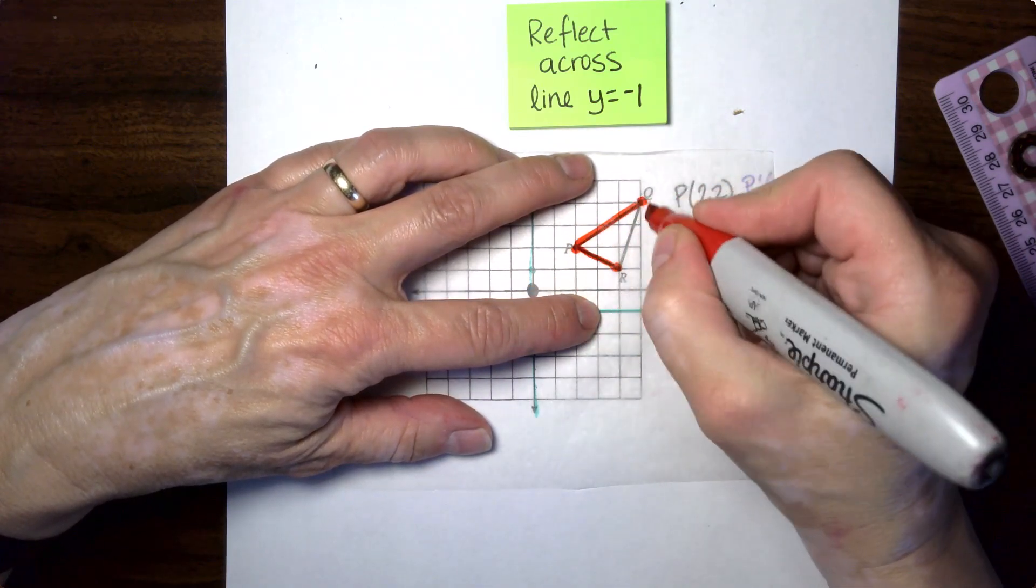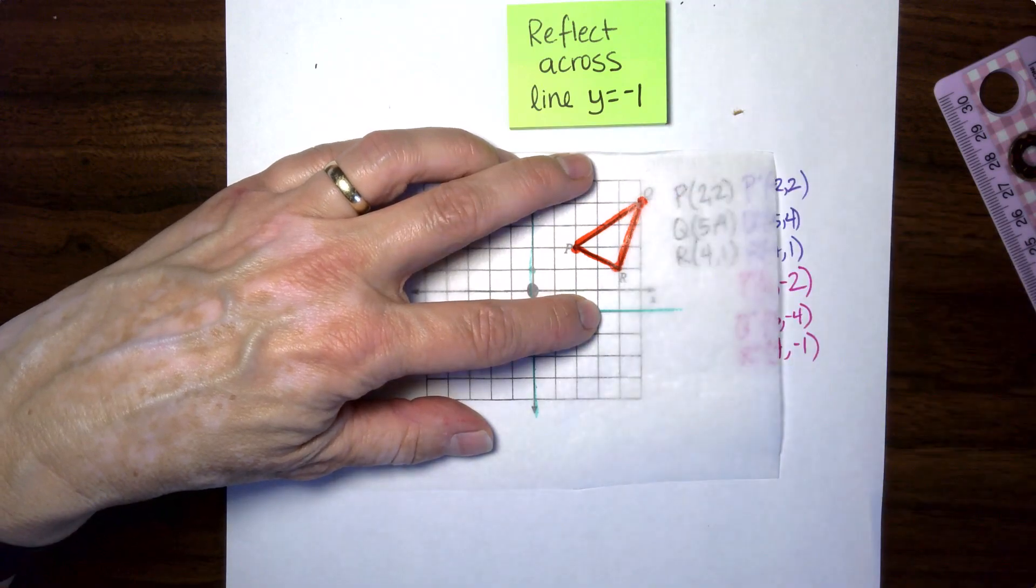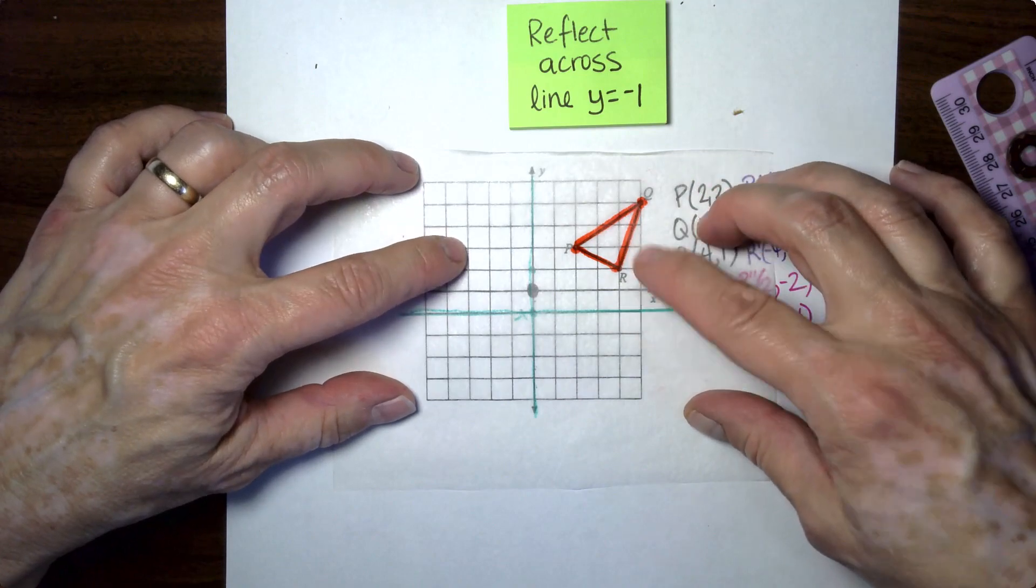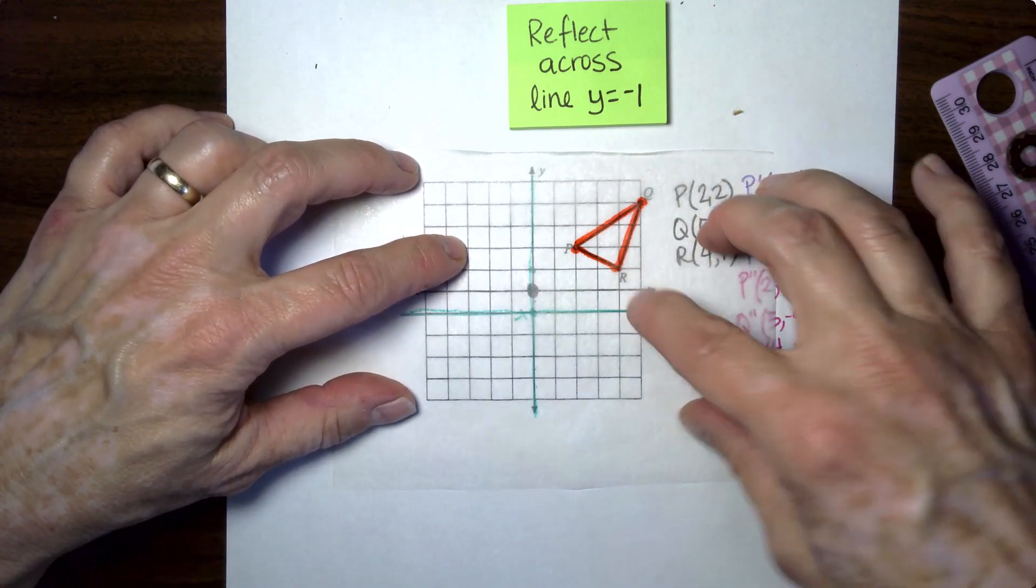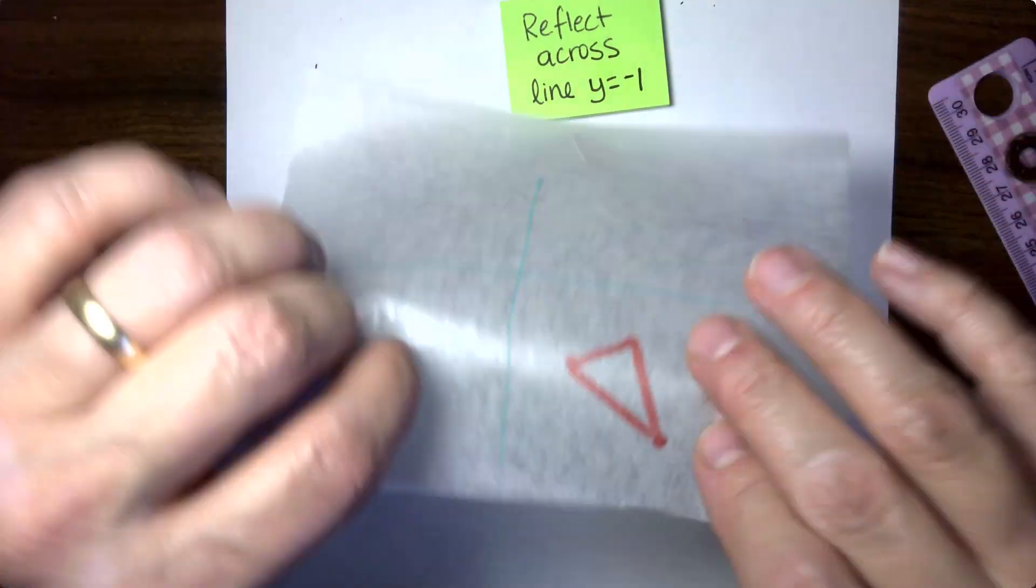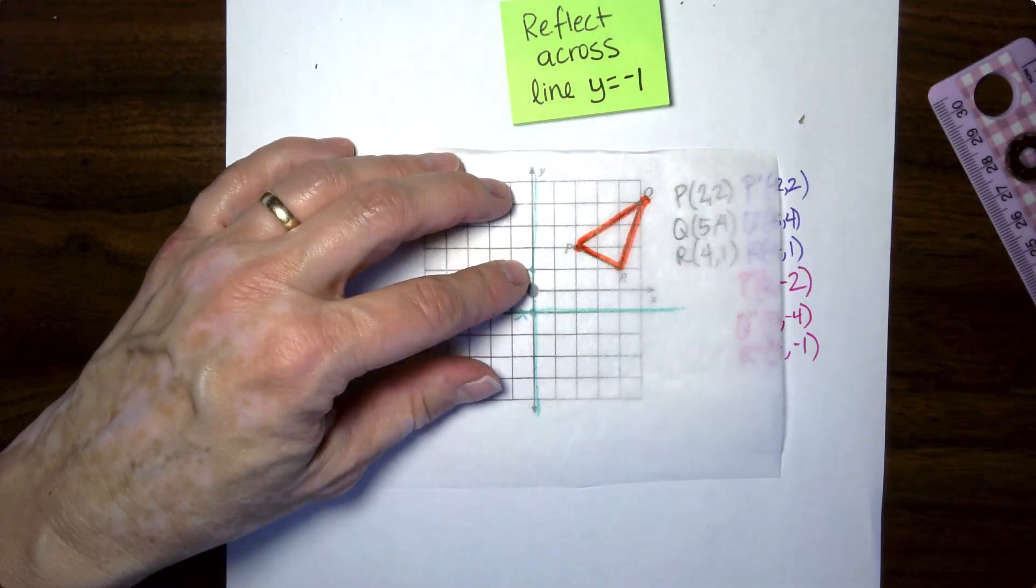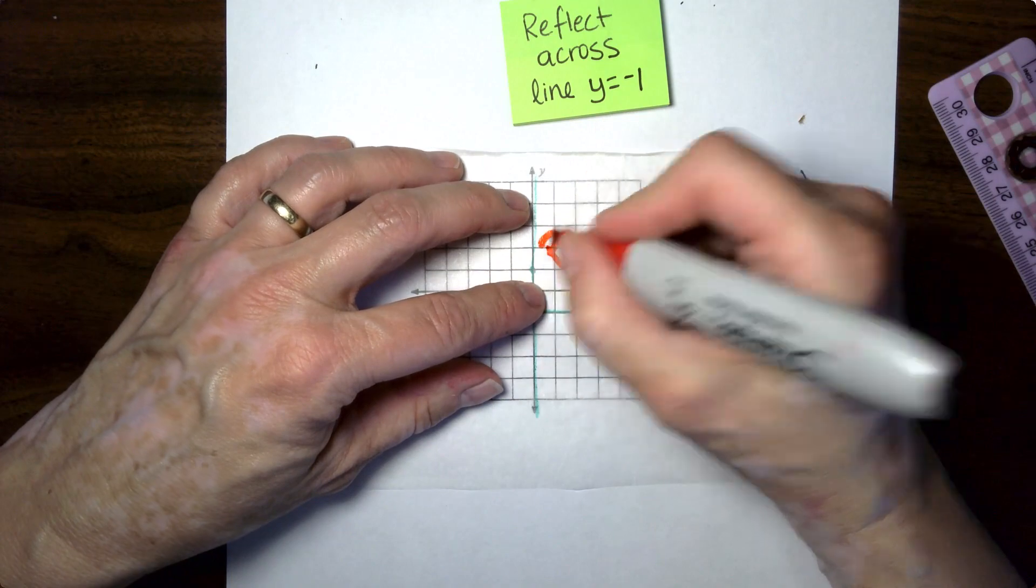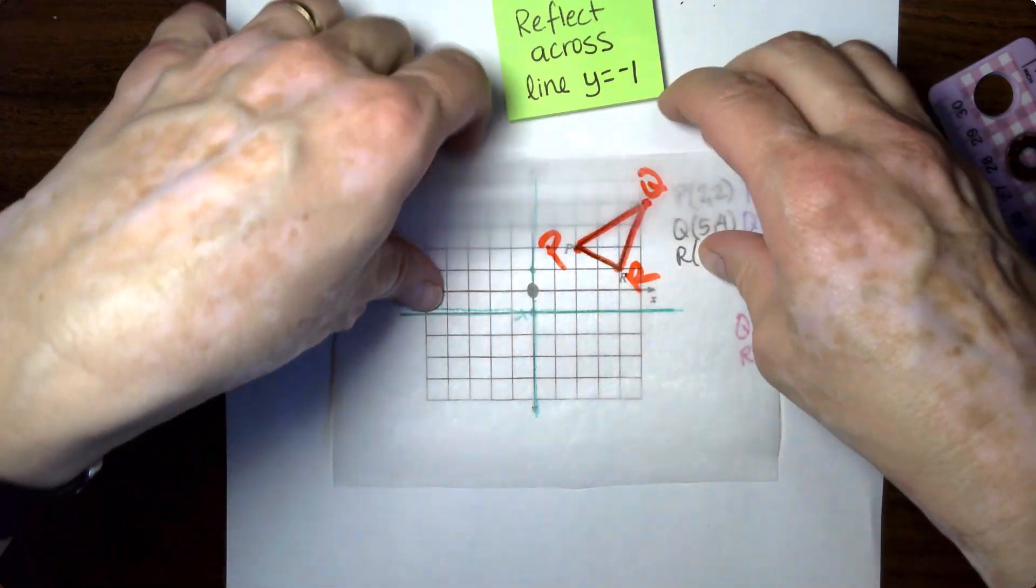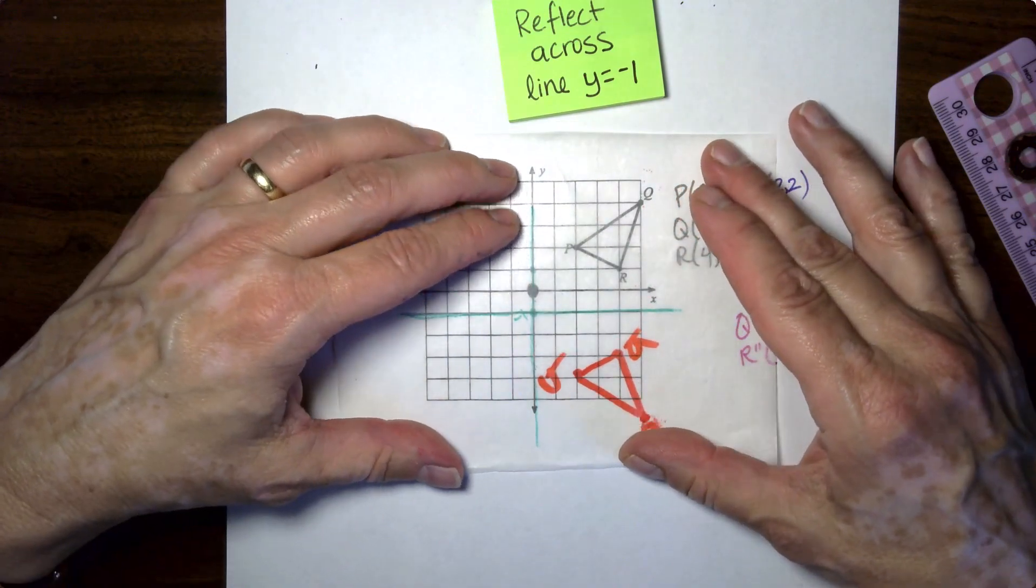So I grab a new piece of patty paper. I want to go across this line. And this is my Y axis. So that is how I am going to do it this time. And there are shortcuts for this too, but I want to show you how to do it with patty paper. Alright. So now I'm going to flip, but I'm going to line this thing back up again with these teal green colored lines.